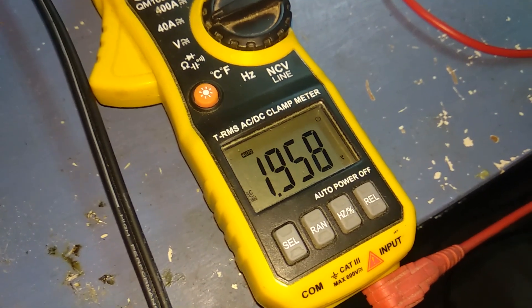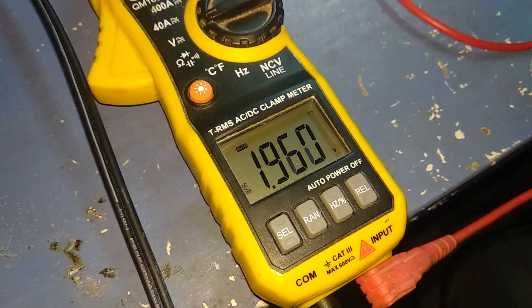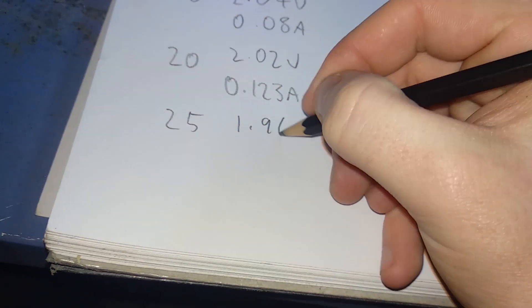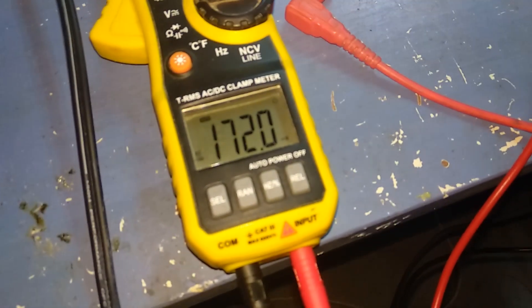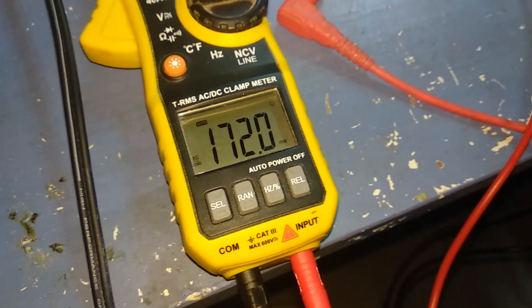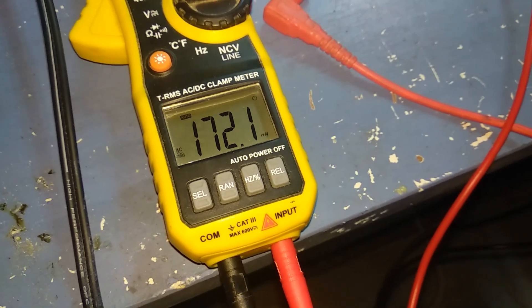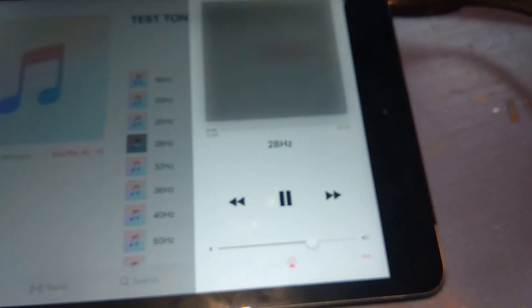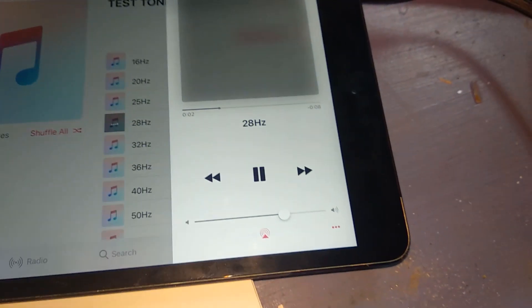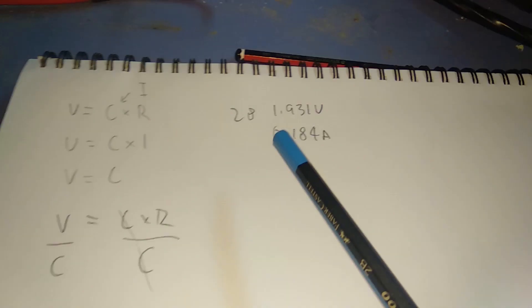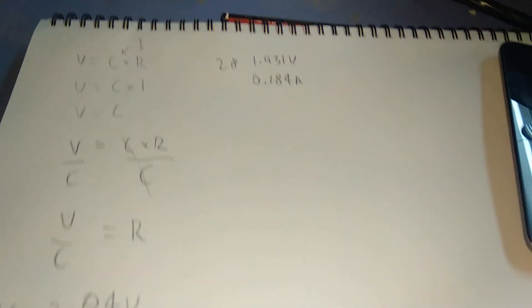Now next one 25 Hertz. See it's dropped slightly 1.96. Just swap the connectors back over 0.172 amps. Up to 28 Hertz, I wish this phone focused a bit faster. 0.184 amps, 1.931 volts. So yeah now you can see that from the voltage we started we've now dropped a whole tenth of a volt.